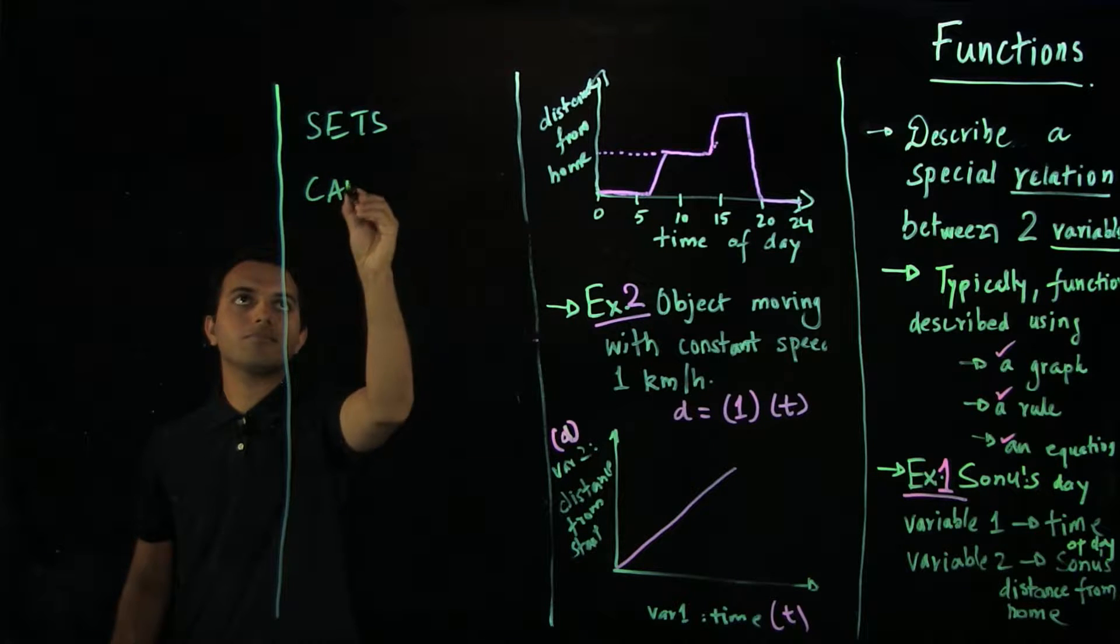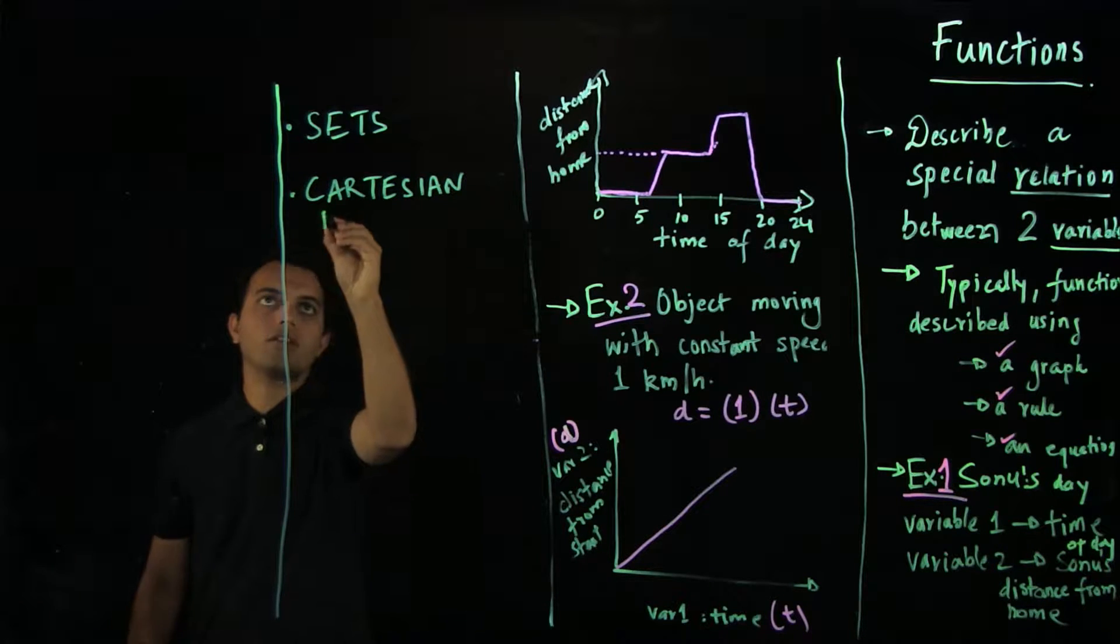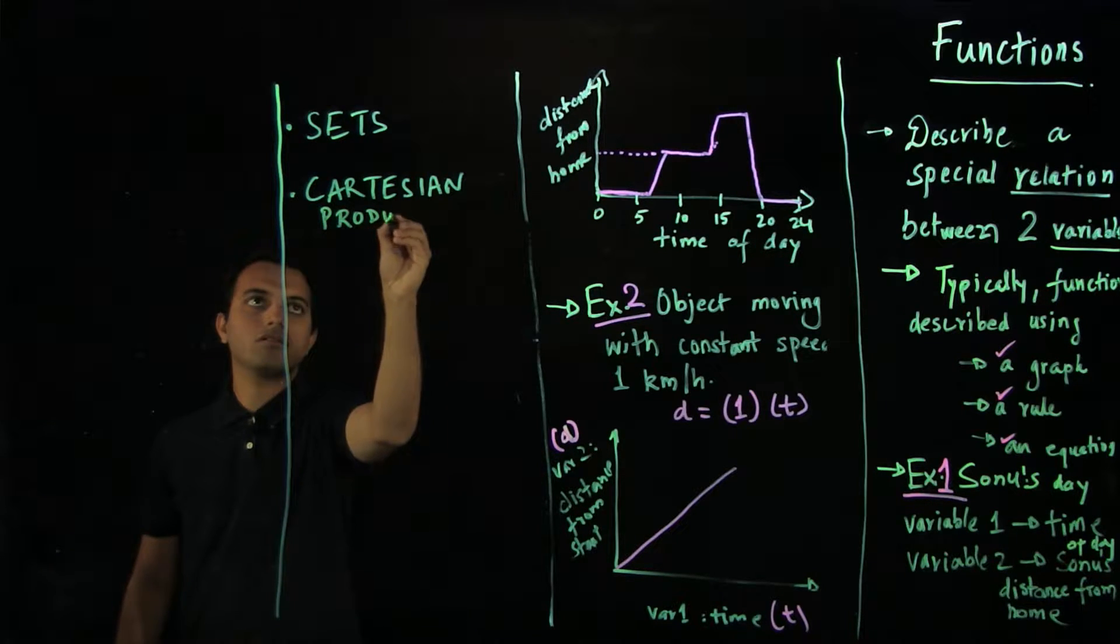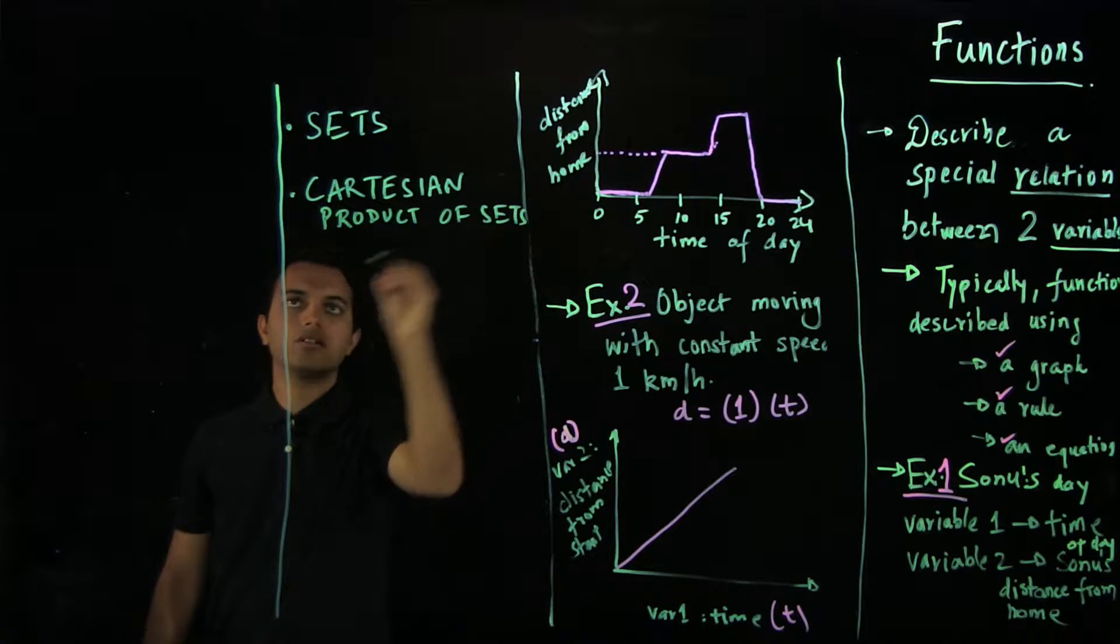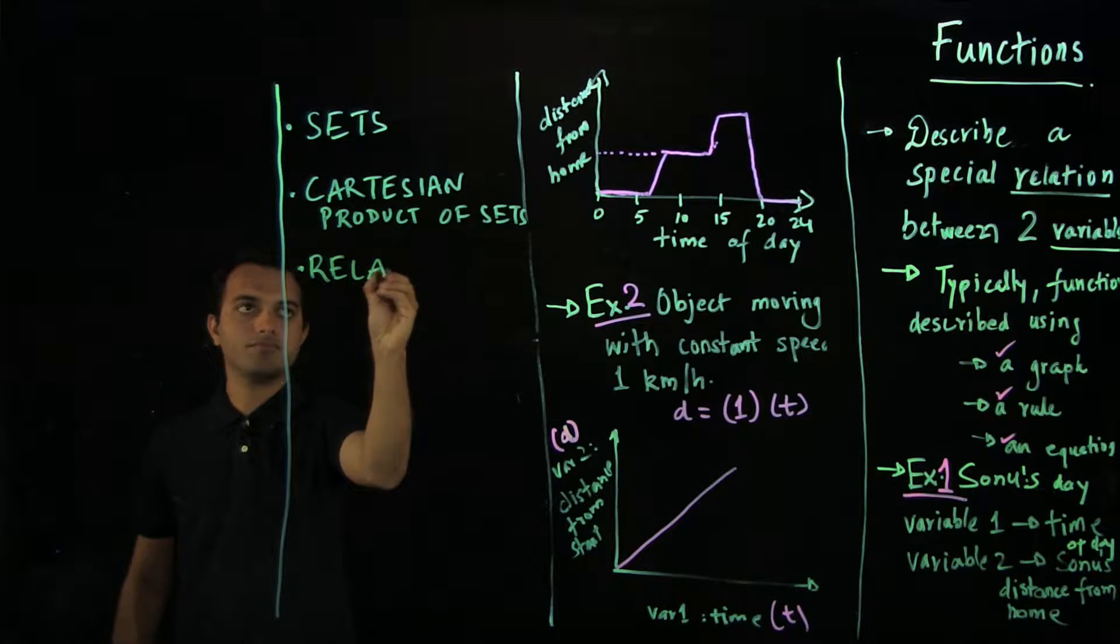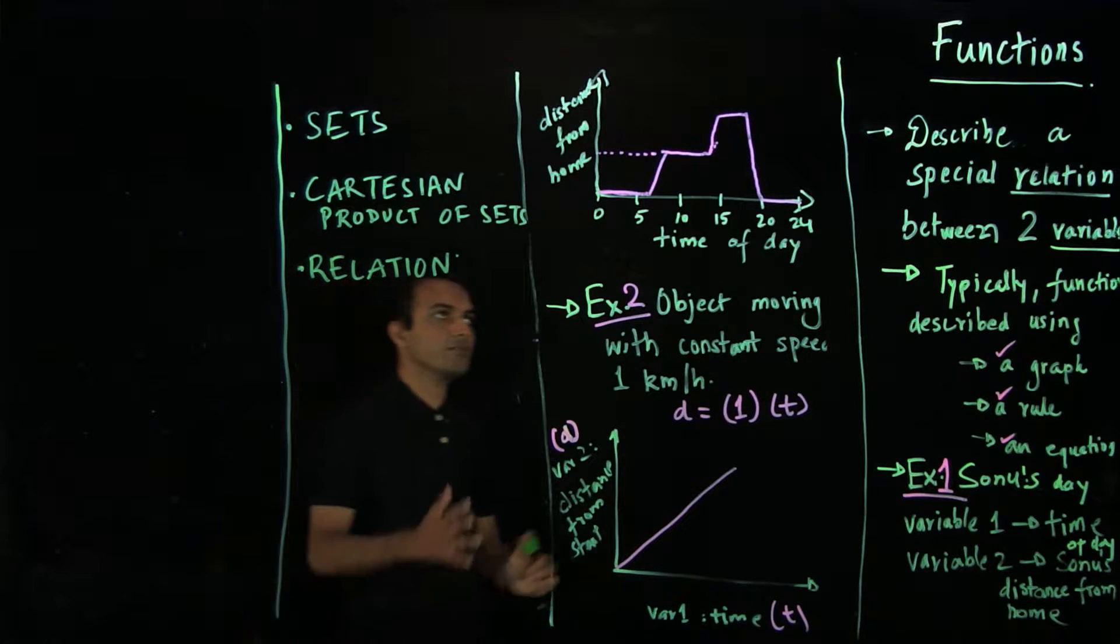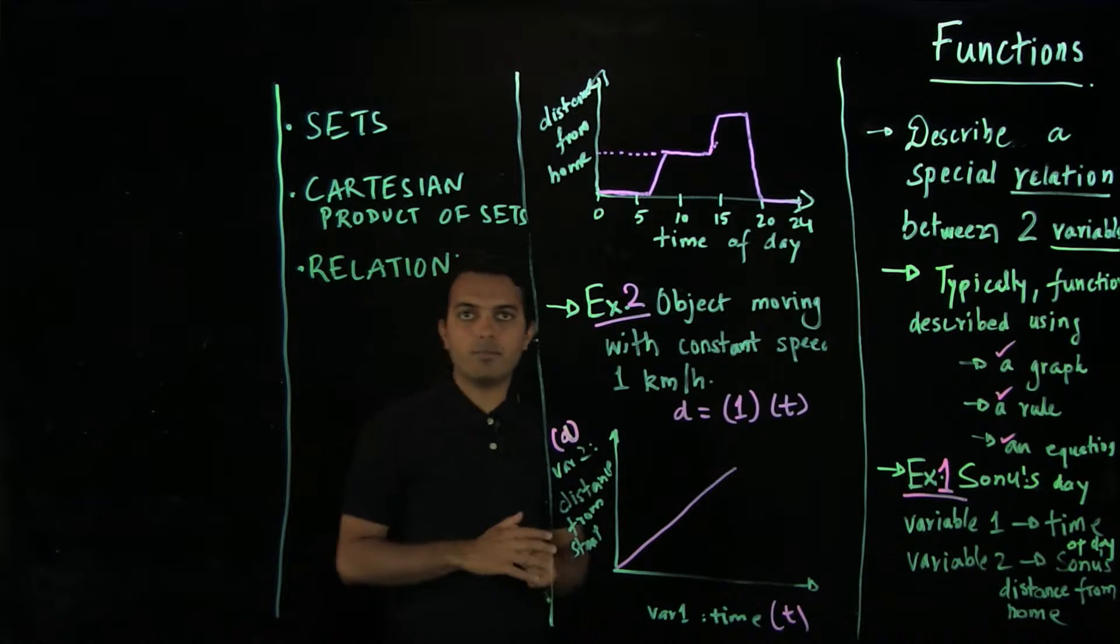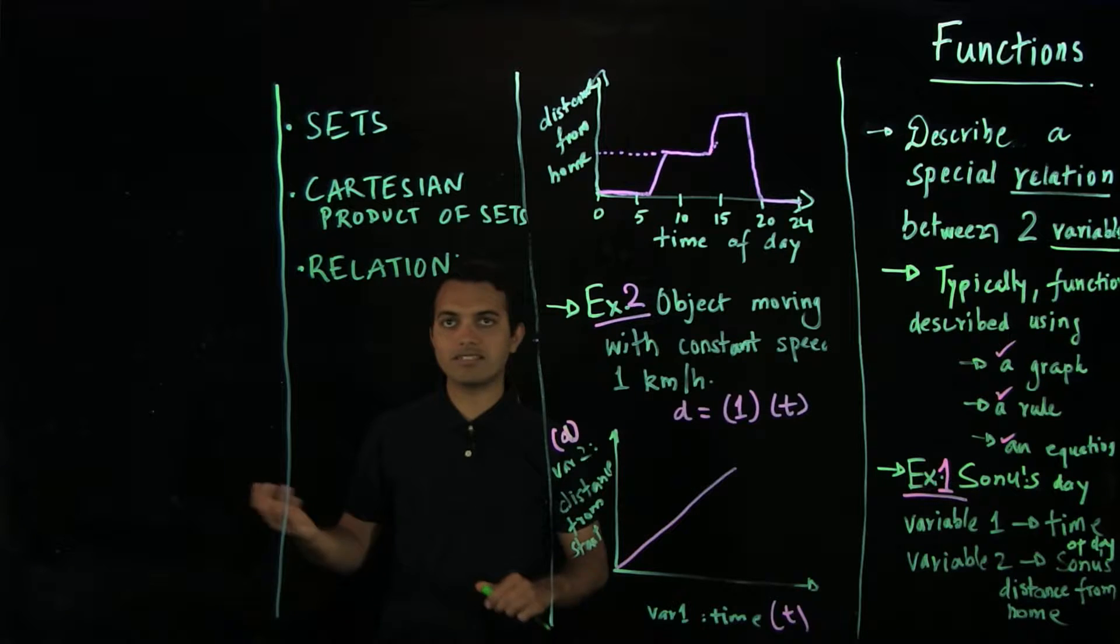Sets, Cartesian product of sets, and relation. And we had tried to see what these mean in context of two small sets A and B.